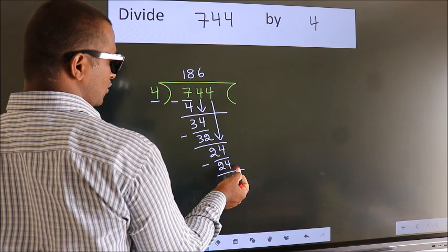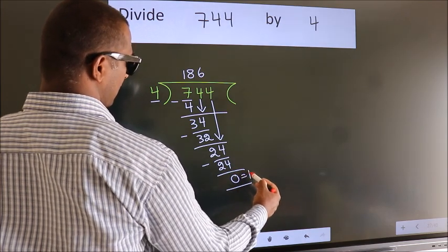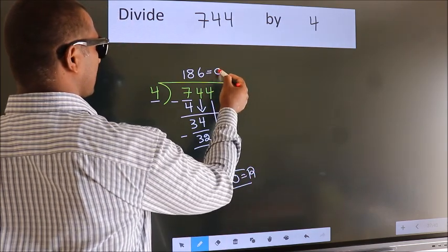No more numbers to bring it down. So we stop here. This is our remainder. This is our quotient.